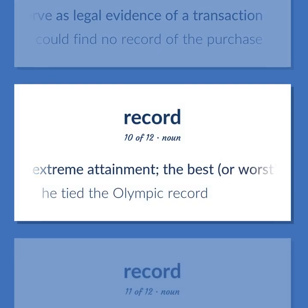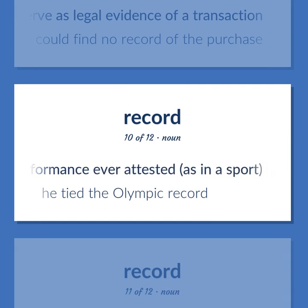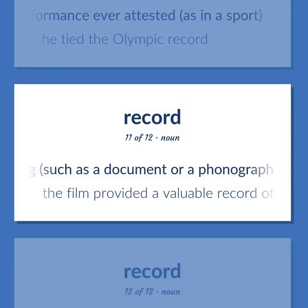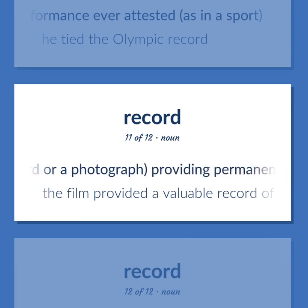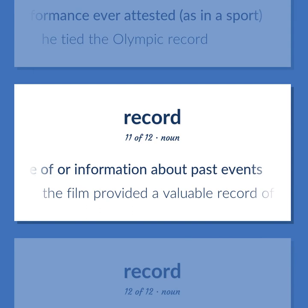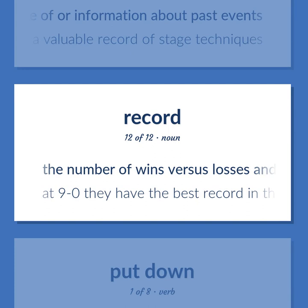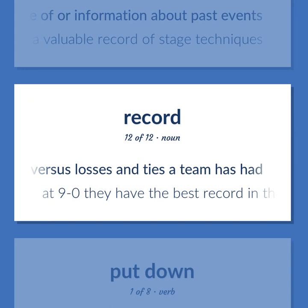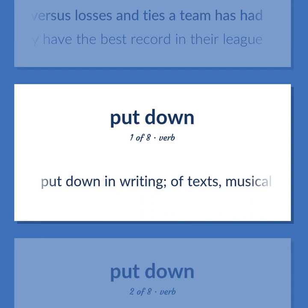Record: an extreme attainment — the best or worst performance ever attested, as in a sport. Example: he tied the Olympic record. Anything, such as a document, a phonograph record, or a photograph, providing permanent evidence of or information about past events. Example: the film provided a valuable record of stage techniques. The number of wins versus losses and ties a team has had. Example: at 9–0, they have the best record in their league. Put down in writing — of texts, musical compositions, etc.